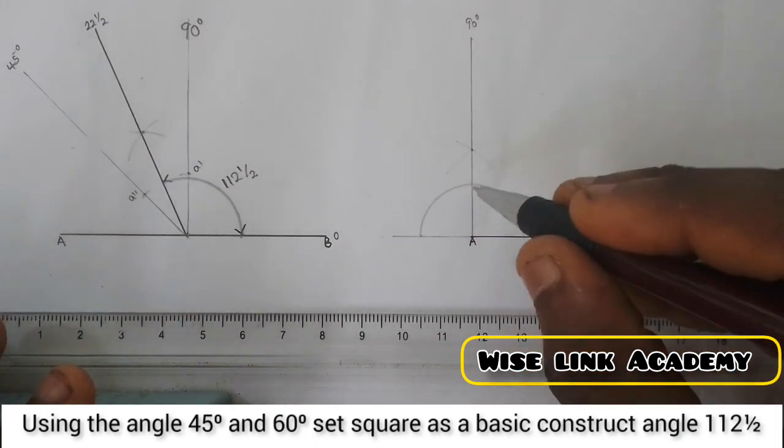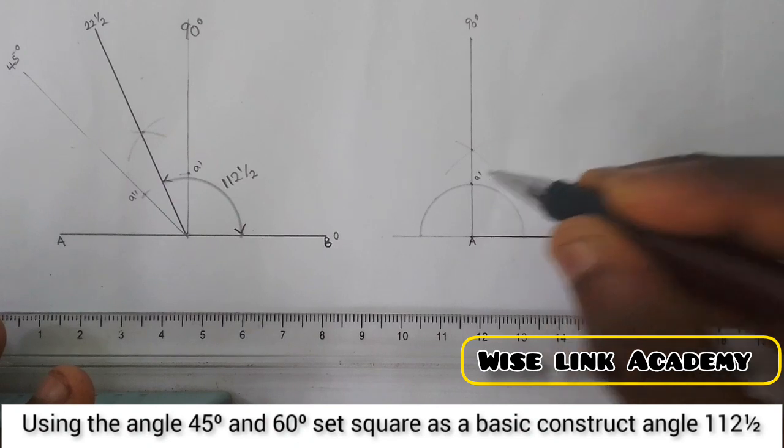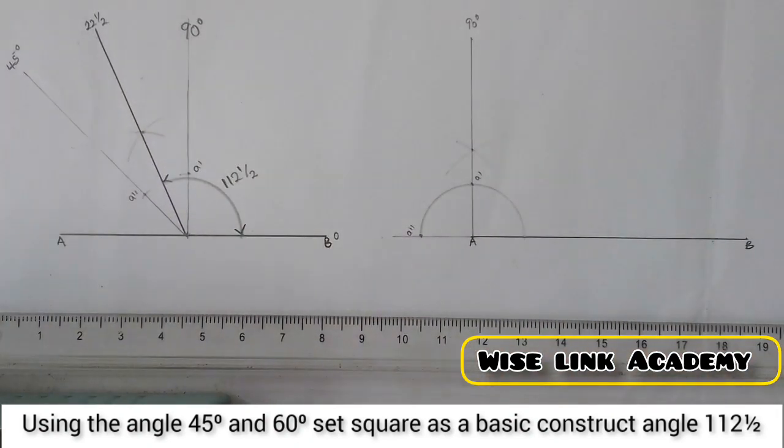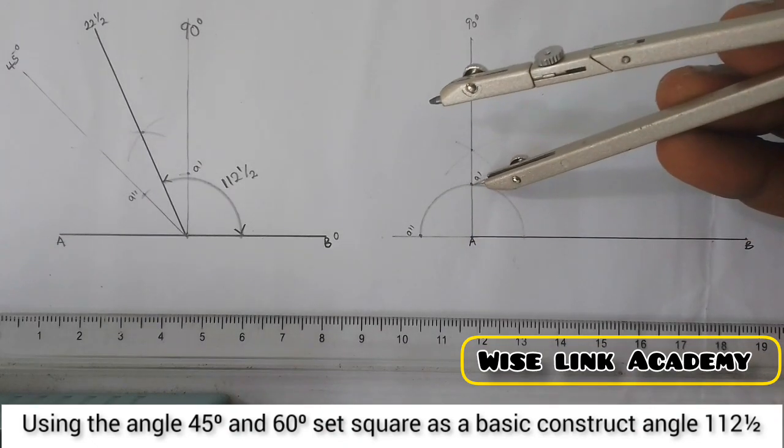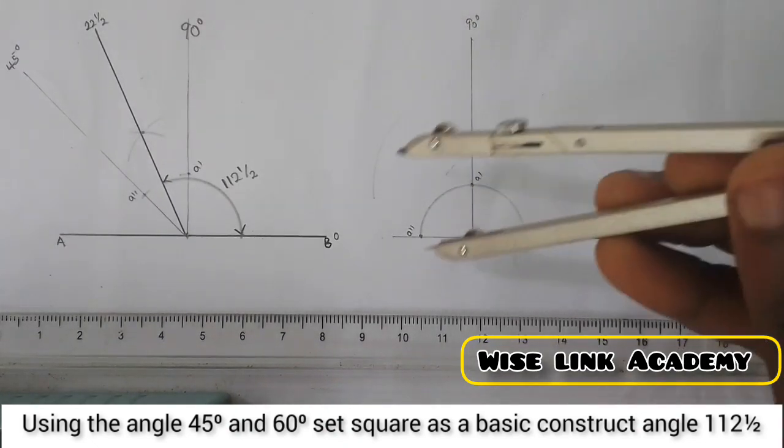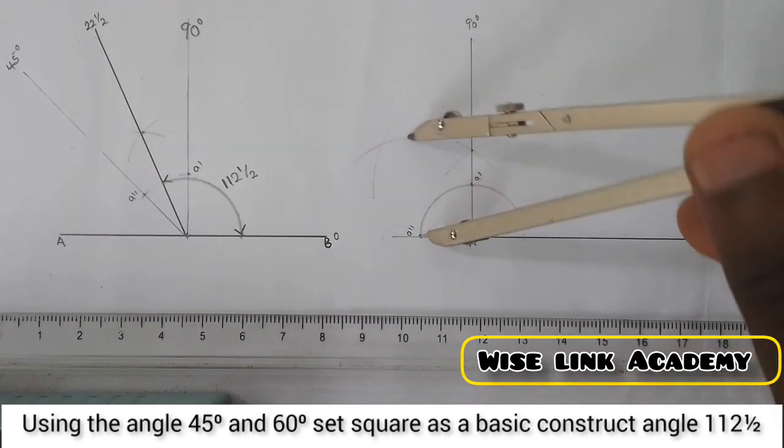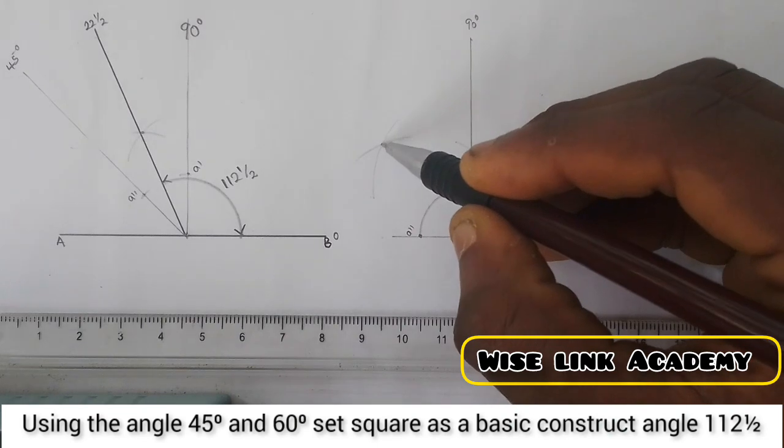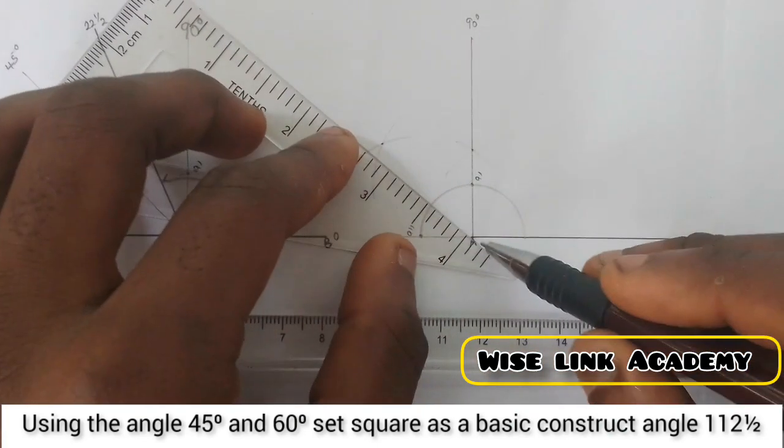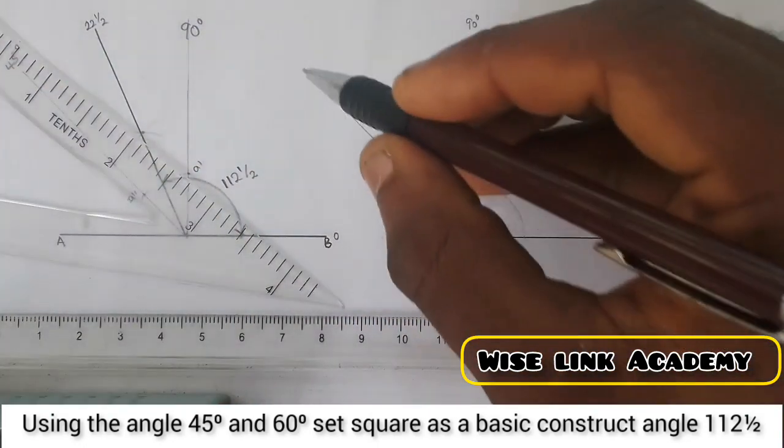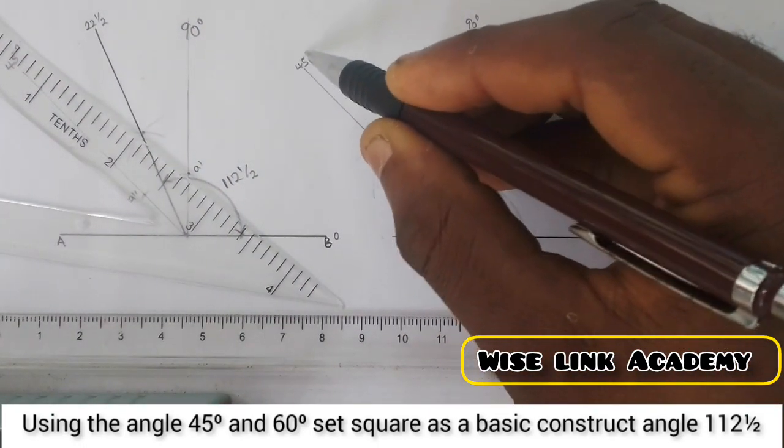So let's call this point my point A double prime. Here becomes my point A prime. At point A prime, with any radius of your choice, strike an arc this way. Come to point A double prime, strike the arc this way. Where the arc caught is at this point.